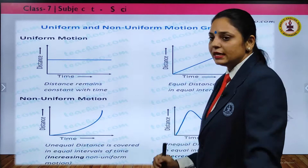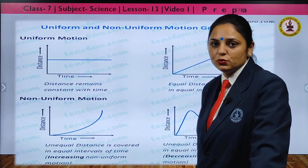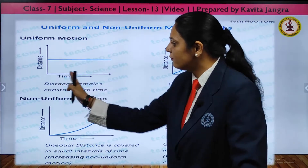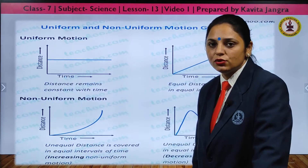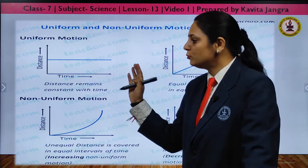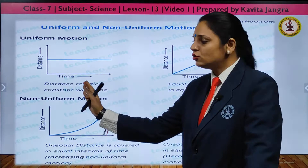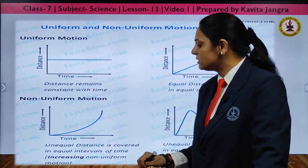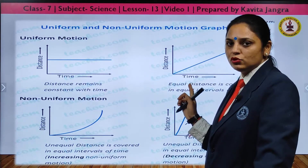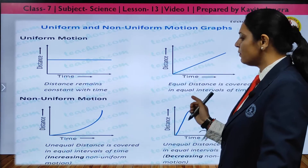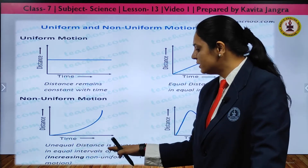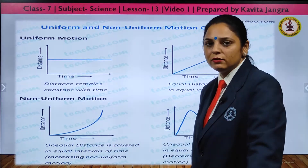The distance-time graph (DT graph) is a very important concept of this chapter. If the graph is parallel to the time axis, the speed is zero — the object is stationary. A straight line graph means uniform motion — equal distance is covered in equal intervals of time. A curved line graph means non-uniform motion — unequal distance is covered in equal intervals of time.